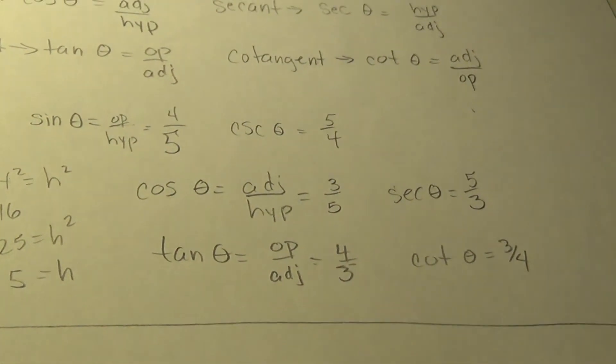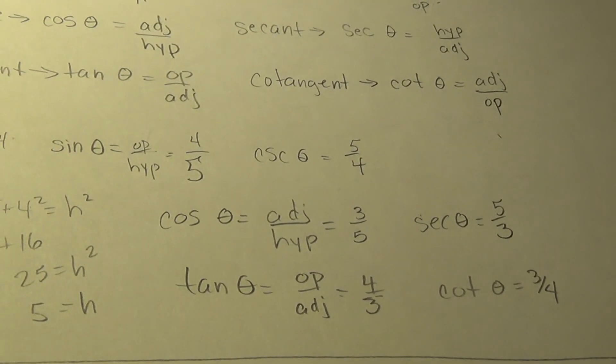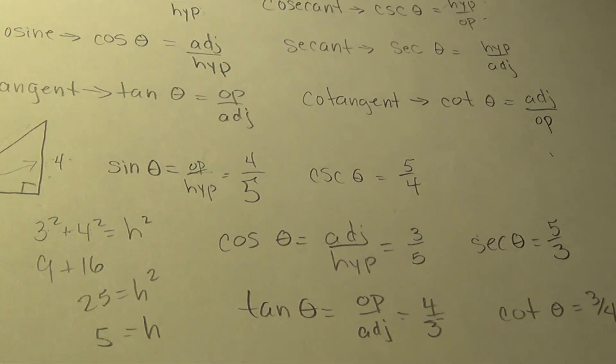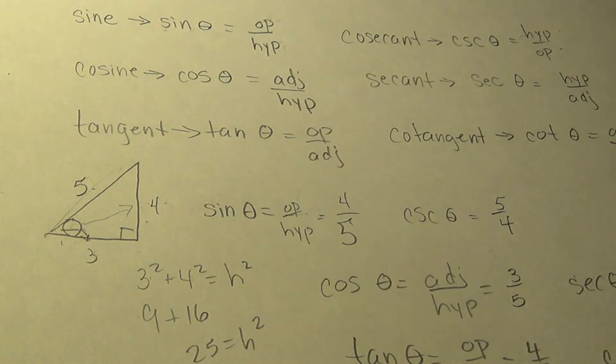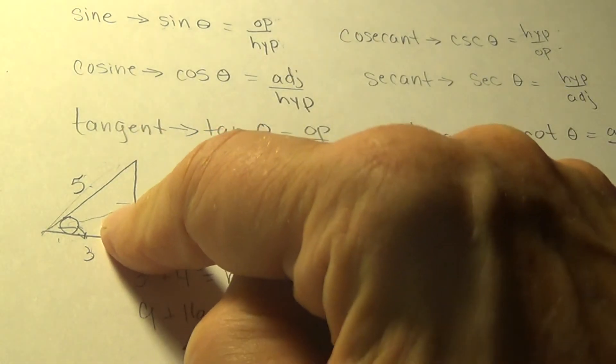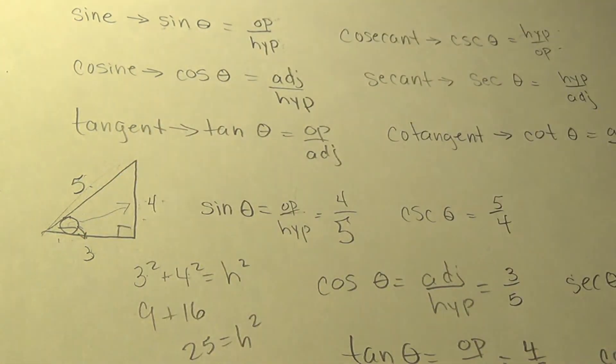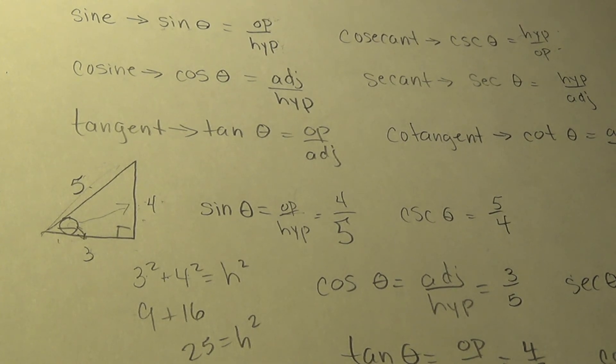So you've done your first, or at least in recent times, you've done the first trig problem, finding the sine, cosine, tangent, cosecant, secant, and cotangent of this angle. Very good. Alright, I'm going to do a part two here, and I'll be right back with you.